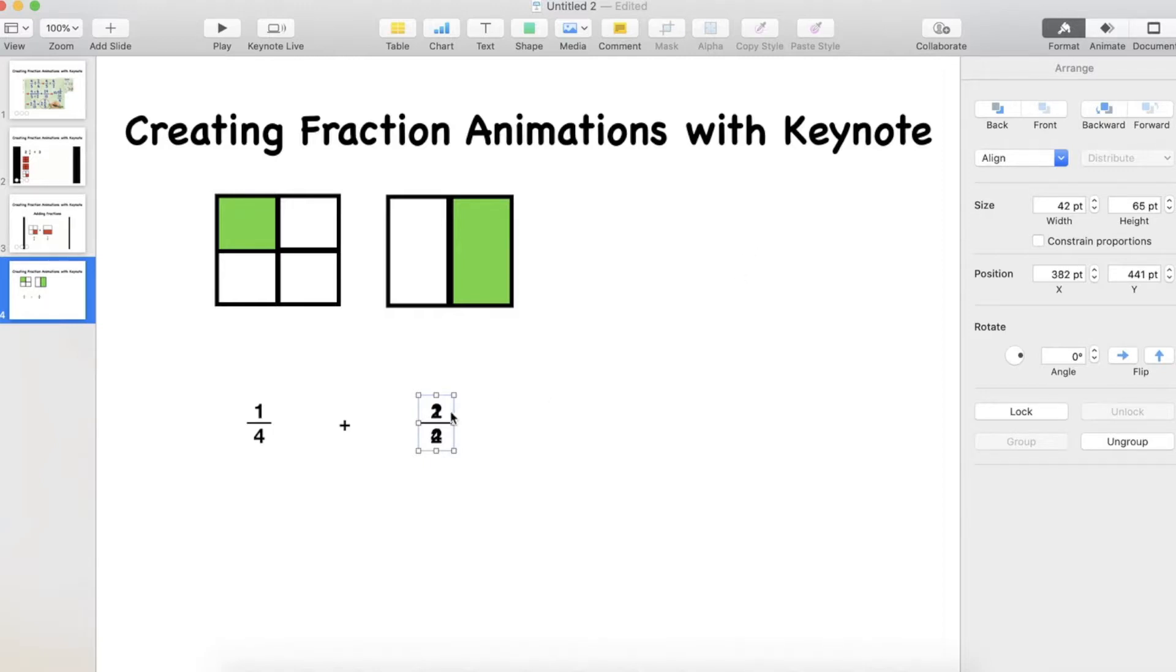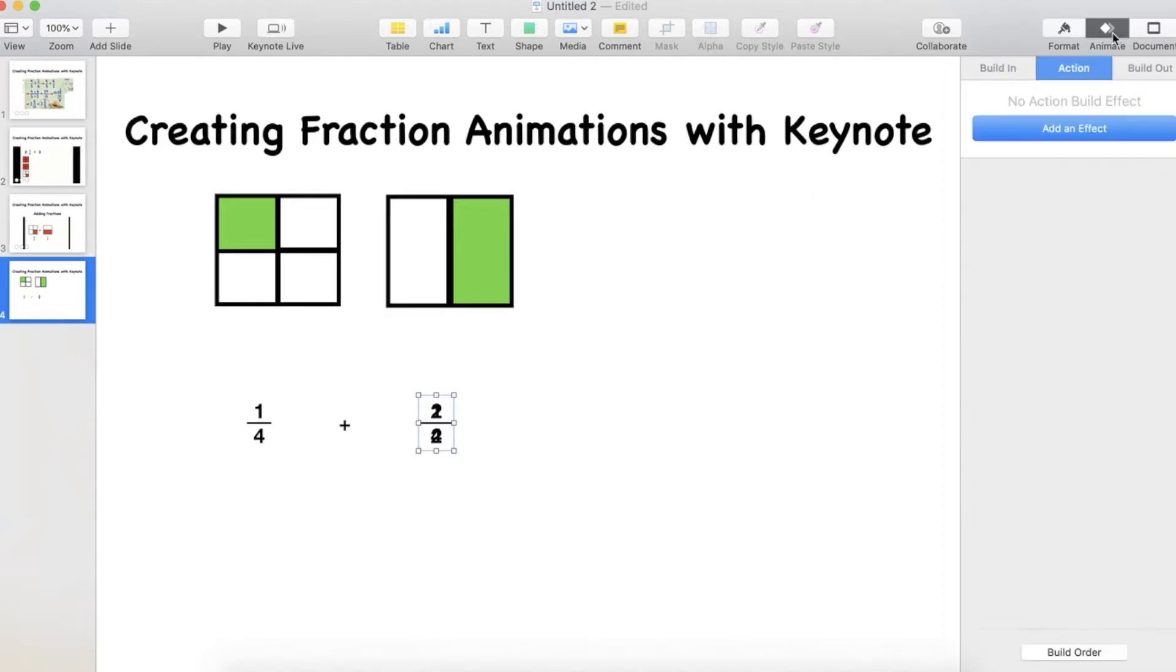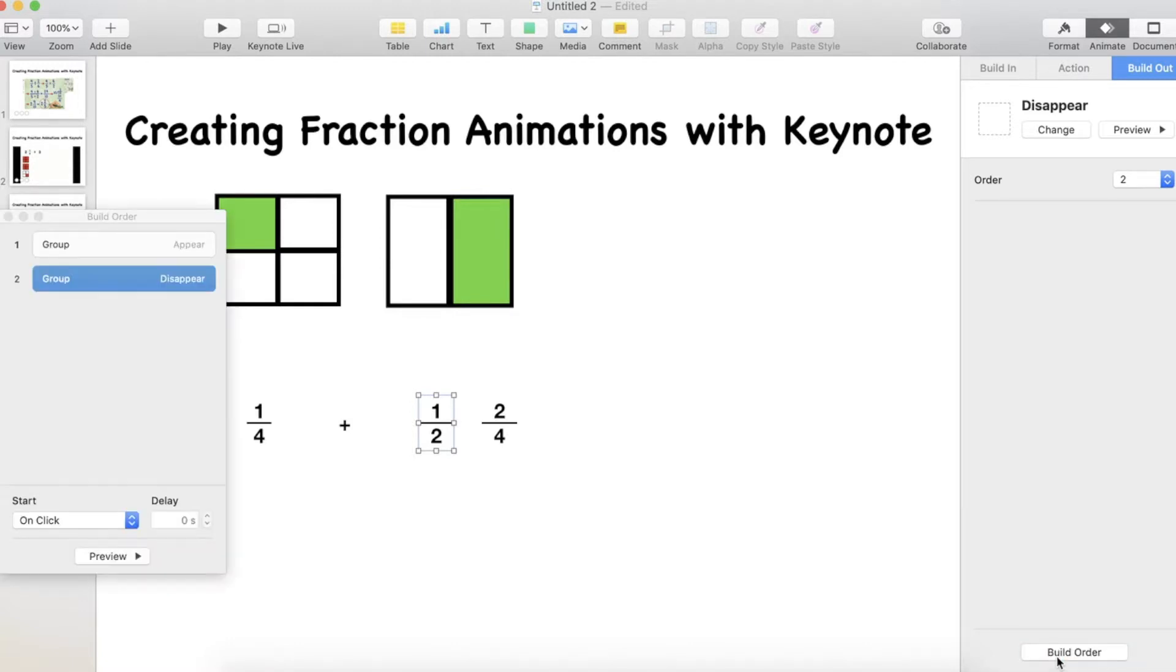So what I want to do is I want to make that object animate. I'm going to use a build in and add an effect to make that appear. So that when I run my animation it appears. The next thing I need to do is make this one disappear at exactly the same time. So this is actually going to be a build out.